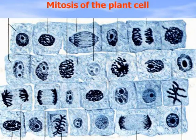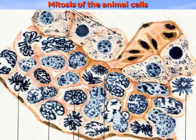In the interphase cell, the nucleus has a nucleolus and despiralized, invisible chromosomes. In prophase, chromosomes become visible. In metaphase, they are located in the equatorial plate. In anaphase, they move to the poles. Similar figures of mitosis can be found in animal cells, but not as clearly visible. This is a metaphase star.